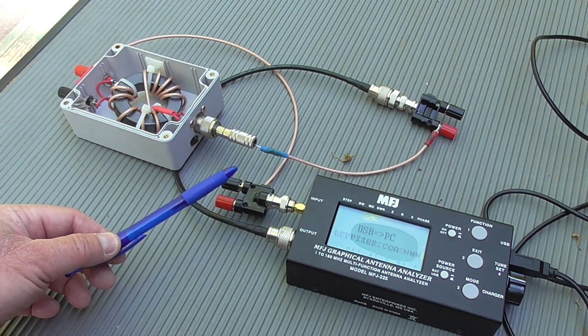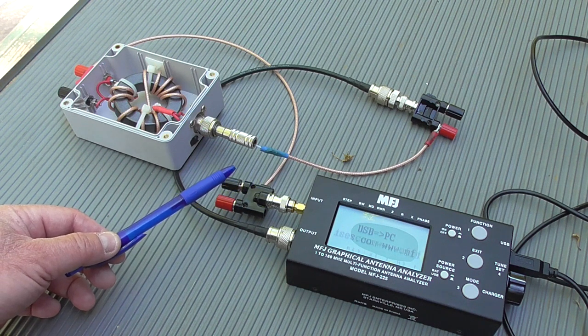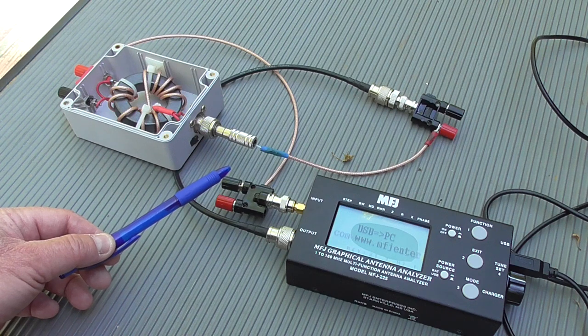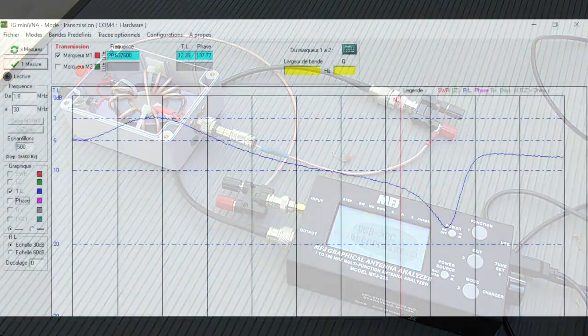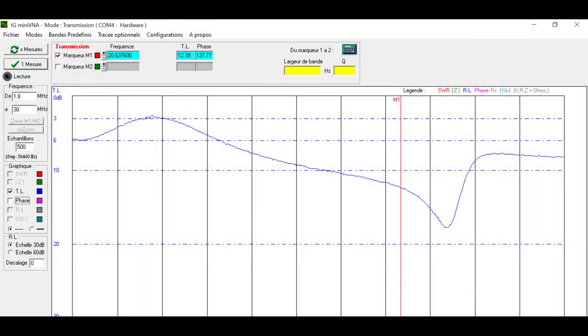We'll analyze the results using IG-free miniware, which is available free of charge on the internet. I've gone ahead and set up the IG-mini software to measure the return loss by putting it into the transmission mode. I've also set the scan frequencies from 1.8 megahertz to 30 megahertz, which is the entirety of the HF bands.